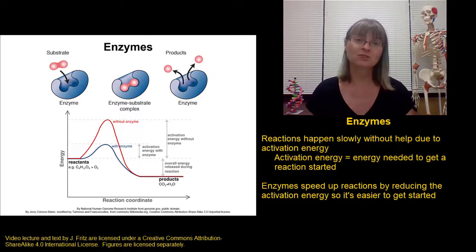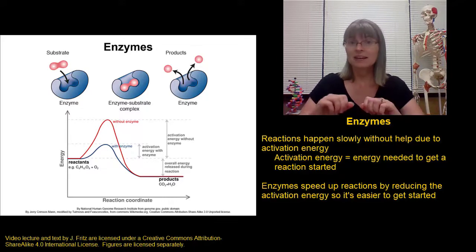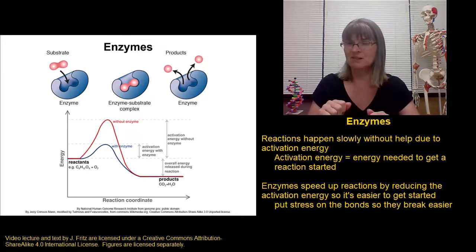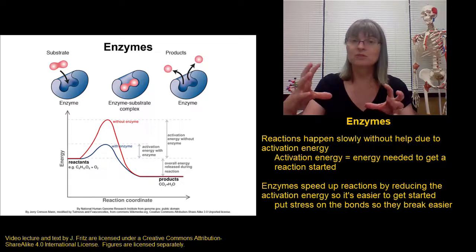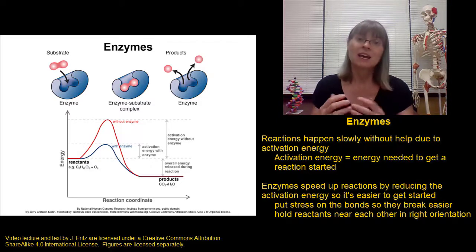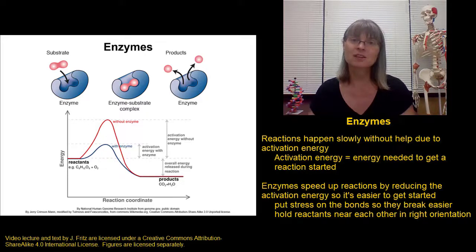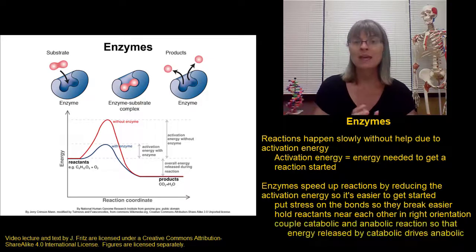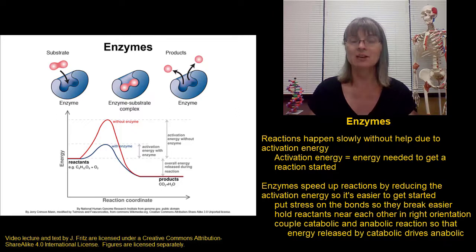Enzymes are helpful to speed up reactions in several different ways. Like I demonstrated already, they put a little stress on bonds to make them easier to break. That's one thing. Another thing enzymes do is they hold the reactants near each other, which makes it a lot easier for them to react. And then third thing that enzymes can do is some enzymes can help couple anabolic reactions and catabolic reactions.